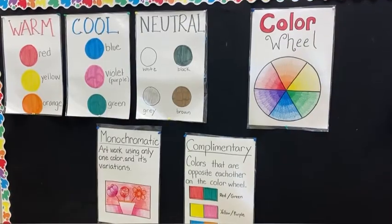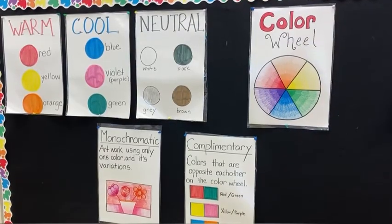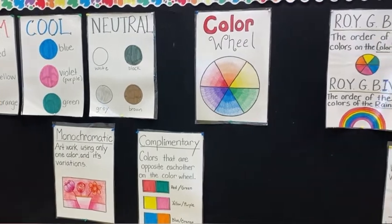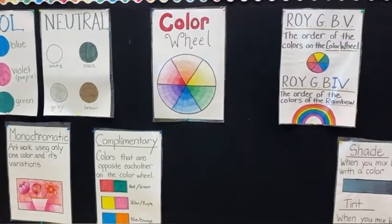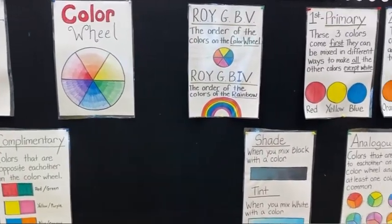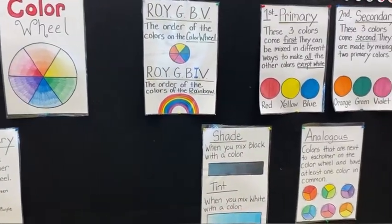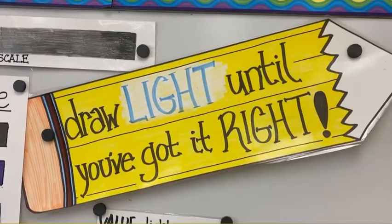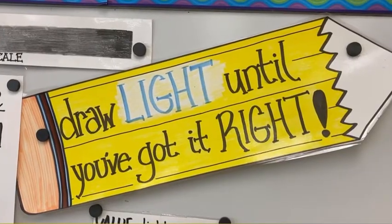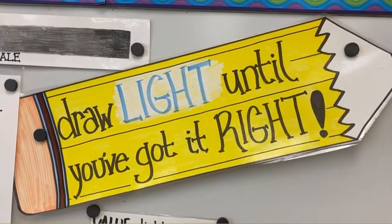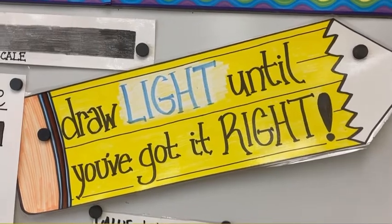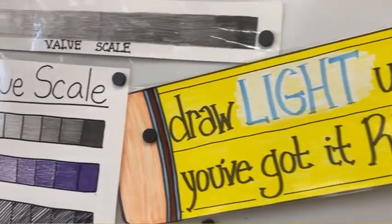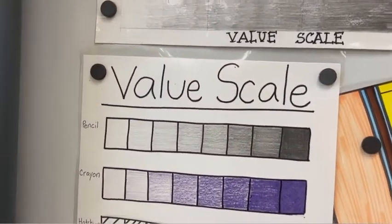The bulletin board behind you is going to display the color wheel. The color wheel is very important and it is how the colors are organized. On that wall, you're also going to see different color families that we will learn about. You will hear me say a lot: draw light until you get it right.